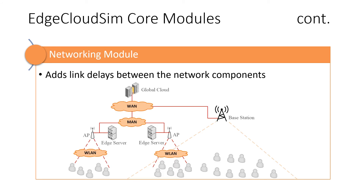The networking module is mainly responsible for calculating the communication delay between the components. Conventional cloud computing simulators just use a static value for link delays, but this approach is very simplistic. In edge computing, both WLAN, Metropolitan, and Wide Area Networks are significant and should be modeled as realistically as possible.